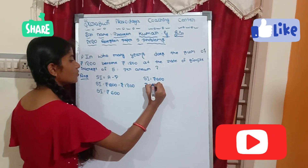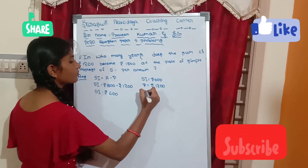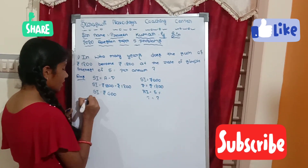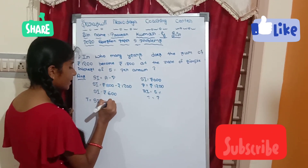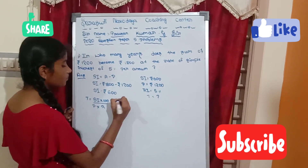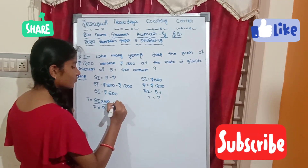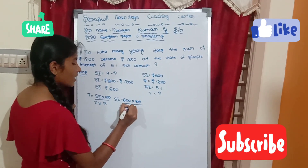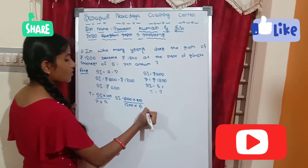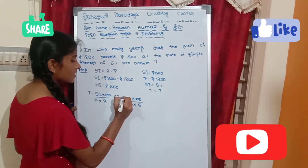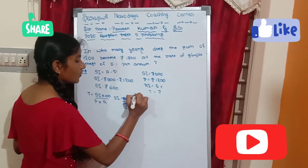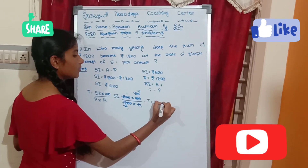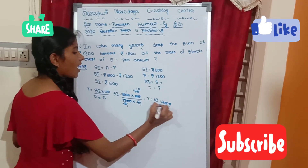Principal is equal to rupees 1200. Rate of interest is equal to 5%. Time is equal to question mark. Time equals 600 into 100 divided by principal 1200 into rate 5%. Cancelling, time is equal to 10 years.